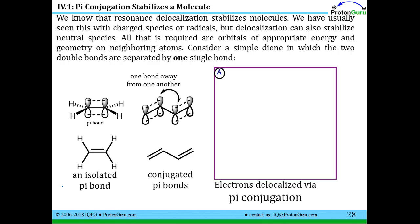All that is required are orbitals of appropriate energy and geometry on neighboring atoms. So let's consider a simple diene in which two double bonds are separated by only one single bond. We have a pi bond, and remember that the pi bond is made by overlap of two p orbitals. This is what we refer to as an isolated pi bond.